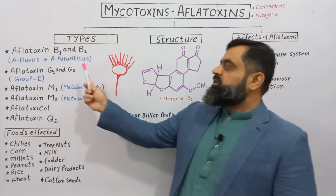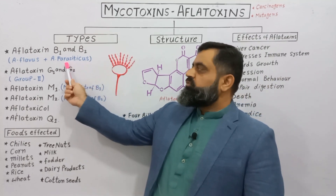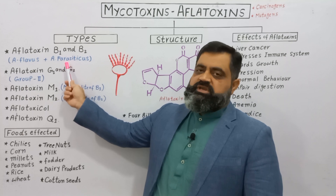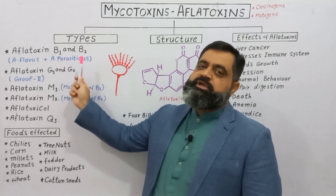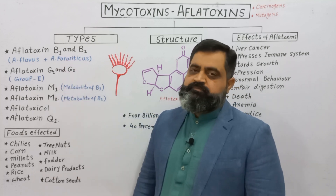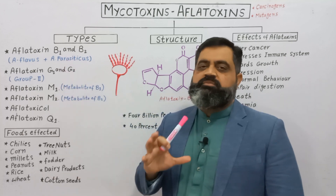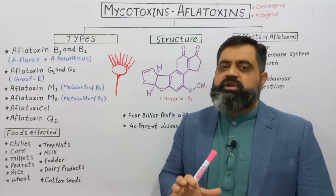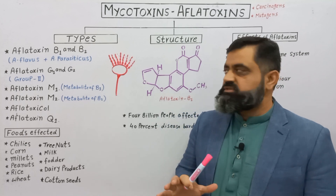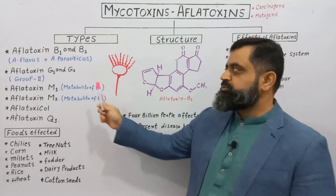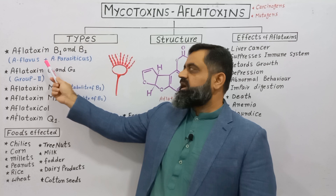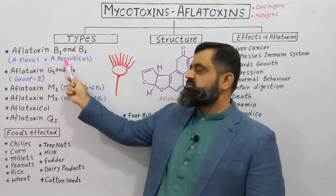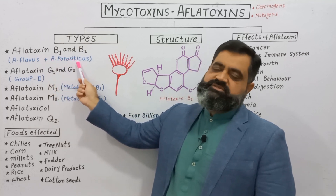The first type of aflatoxins are B1 and B2. These are very powerful aflatoxins which are produced by Aspergillus flavus and Aspergillus parasiticus.